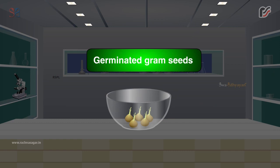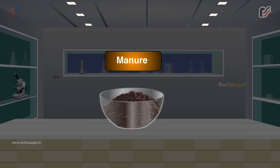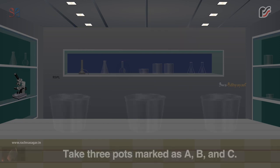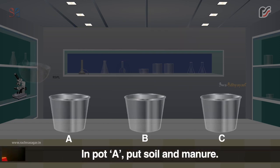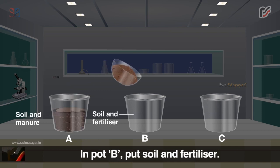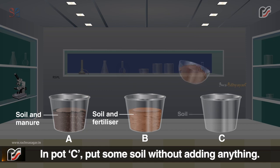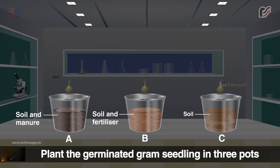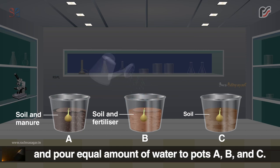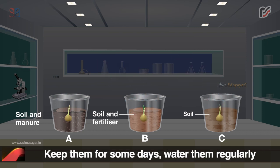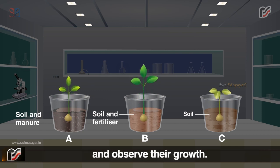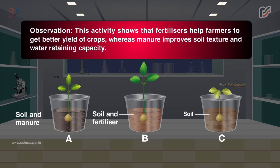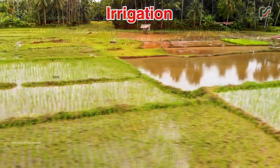Activity 1 — Aim: To show growth of seedlings with manure and fertilizer. Materials required: germinated gram seeds, three pots, fertilizer, manure, soil and water. Procedure: Take three pots marked A, B and C. In pot A put soil and manure; in pot B put soil and fertilizer; in pot C put soil without adding anything. Plant germinated gram seedlings in the three pots, pour equal amounts of water, and observe their growth over several days. This activity shows that fertilizers help get better crop yield, whereas manure improves soil texture and water-retaining capacity.